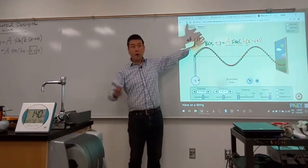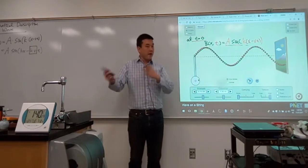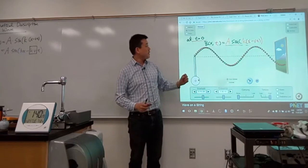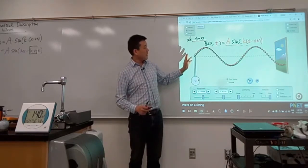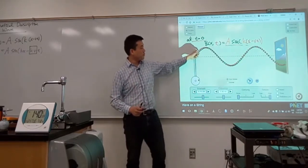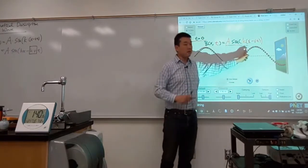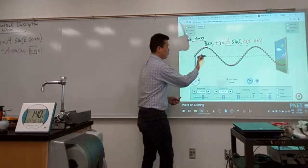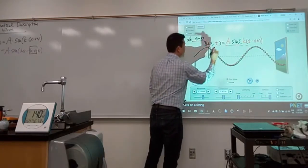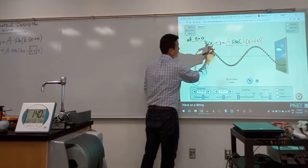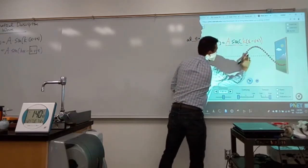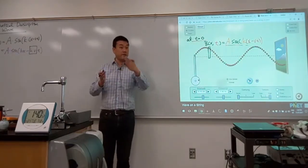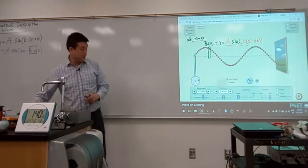The snapshot description is one way to describe wave. Another way to describe wave is you fix the position. So instead of saying I'm going to look at all the different positions of wave at a single moment in time, I'm going to do the exact opposite. I'm going to look at a single position of the wave, single x value, and look at that over different values of time, t. So let me let the time go.